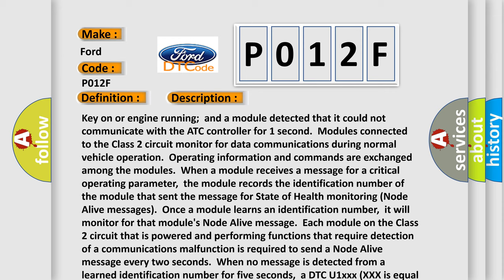Each module on the class 2 circuit that is powered and performing functions that require detection of a communications malfunction is required to send a node alive message every two seconds. When no message is detected from a learned identification number for five seconds, a DTC U1XXX is set, where XXX equals the three digit identification number.